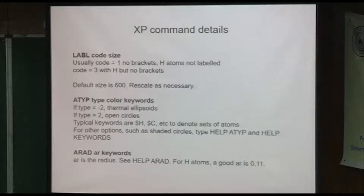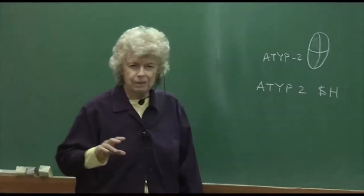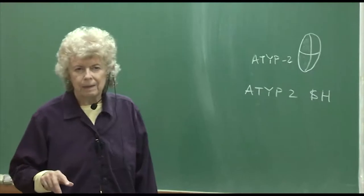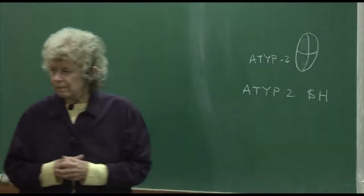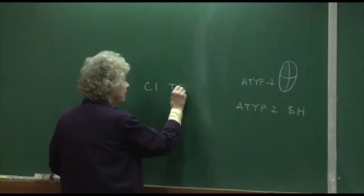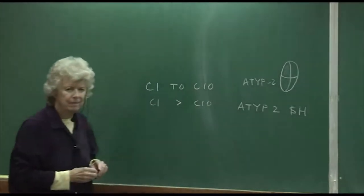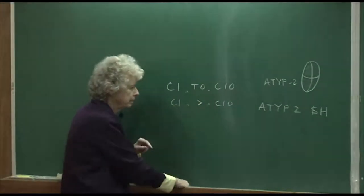ATIP again has all these possibilities — thermal ellipsoids, open circles, shaded circles, and so on. If you say 'help ATIP,' it lists all the possibilities. Keywords applies to all of the commands. For example, dollar-sign H is a keyword. If you leave off keywords, it applies to everything. If you want to confine it to two atoms, you just name those atoms. If you want a list, you can say C1 to C10, or C1 greater-than C10 — both work, with a space in each case. You can say 'help keywords' and it explains all that too.